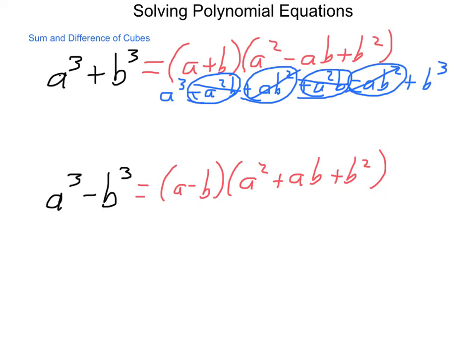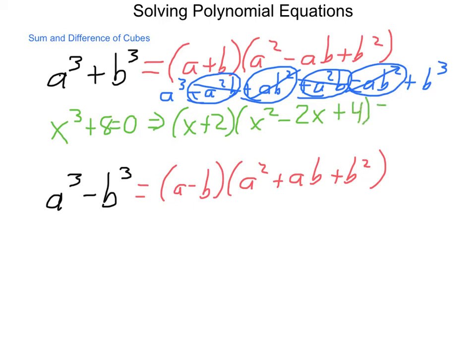So what would happen if we had an equation such as x cubed plus 8 equals zero and needed to solve it? Well, x cubed is a cubic term, and 8 is a cubic term. So what we would have is x plus 2 — the cube root of each one — times x squared minus 2x plus 4 equals zero. We'd be able to solve the first factor, giving x equals negative 2. For the second, we'd have to use something like the quadratic formula. But now we're able to expand the types of equations we can solve through factoring.